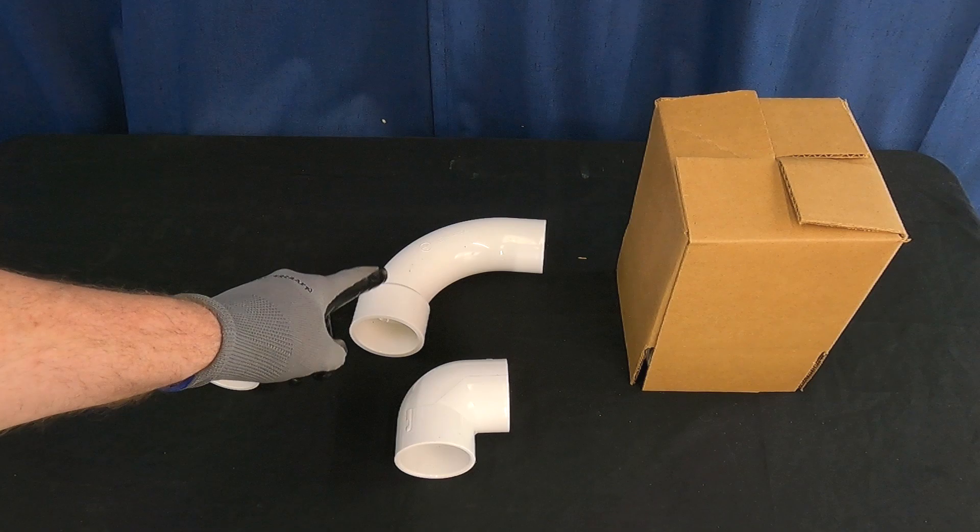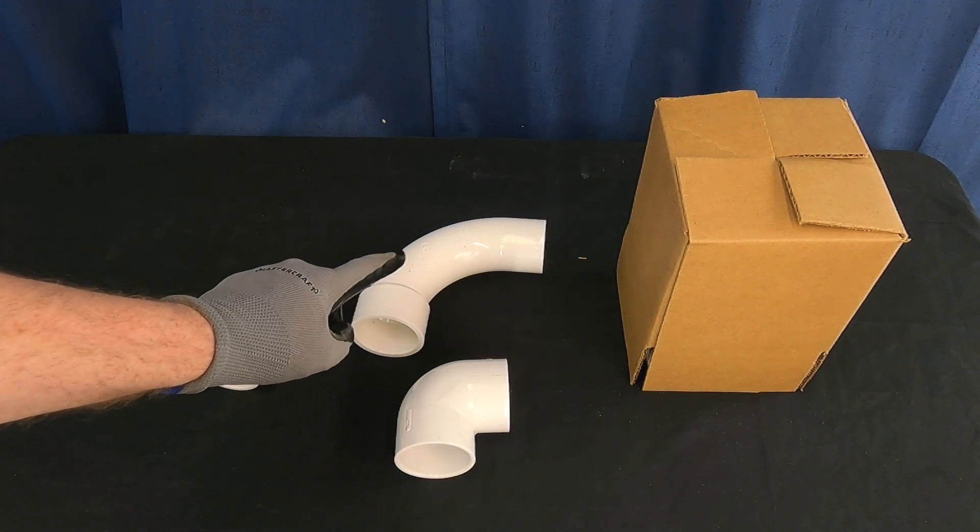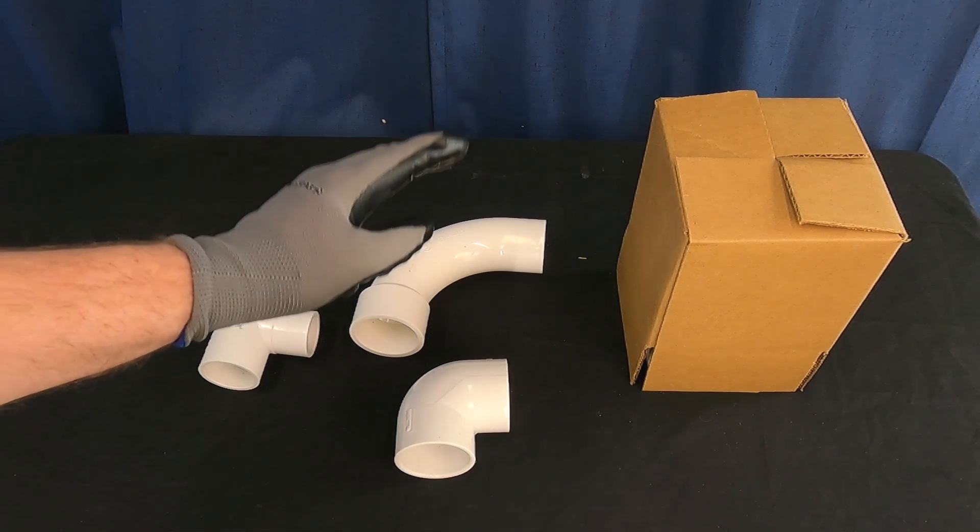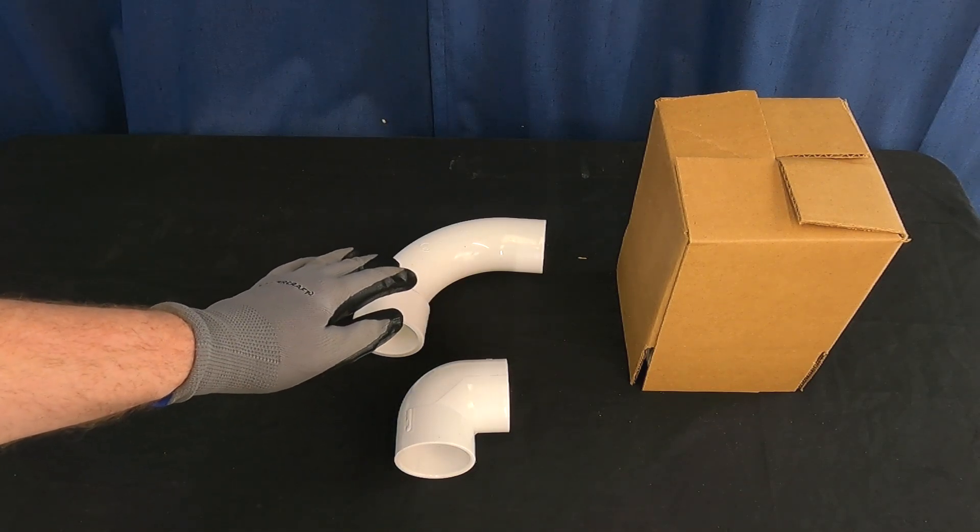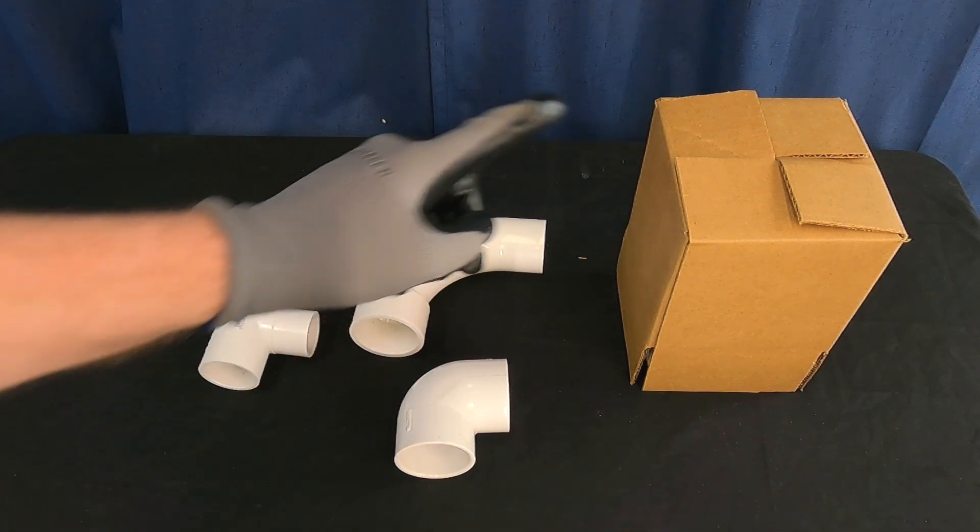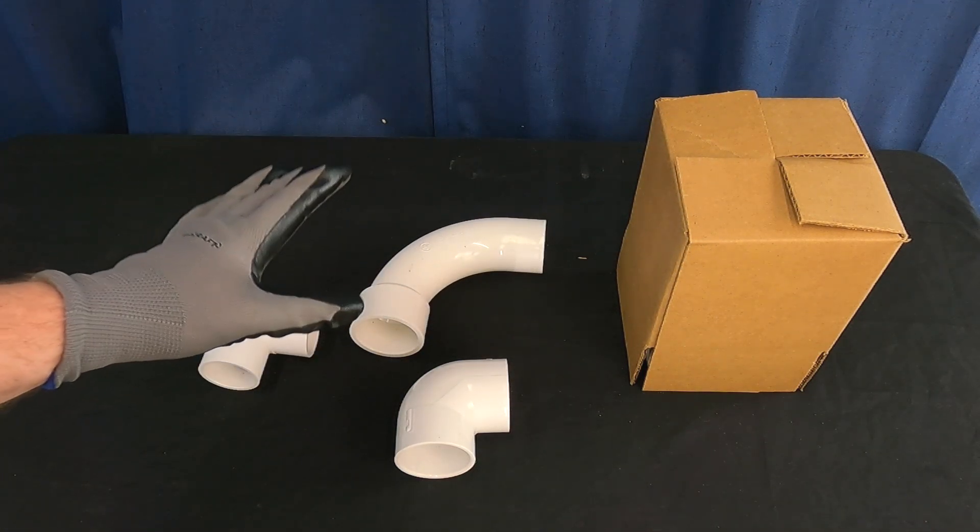So why would we make small incremental changes to the efficiency by adding something like sweep elbows when there's still major efficiency improvements to be had using what I have underneath the box here. We're almost there. So that's what this comes down to.